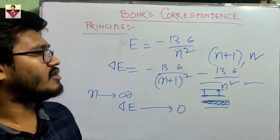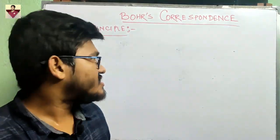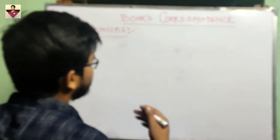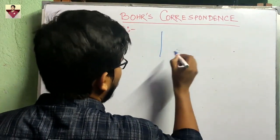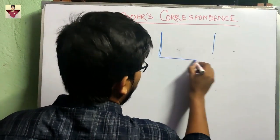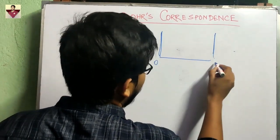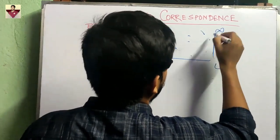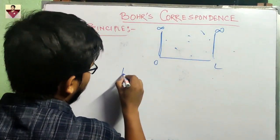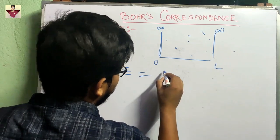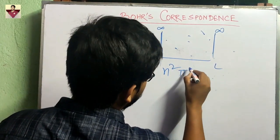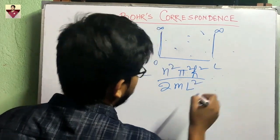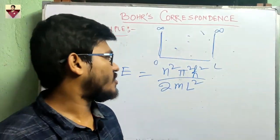Now let's check if this principle is valid for a particle in a box — a particle in a 1D box of length 0 to L. This particle is free inside the box, with infinite potential at the walls. If you calculate the energy, you find E = n²π²ℏ² / (2mL²), so E is proportional to n².